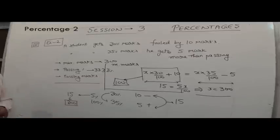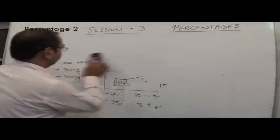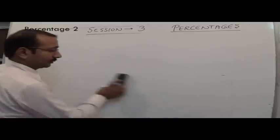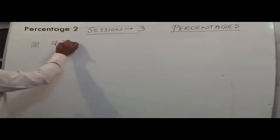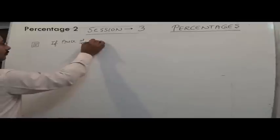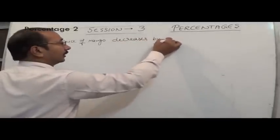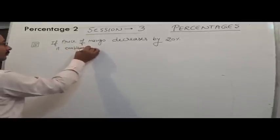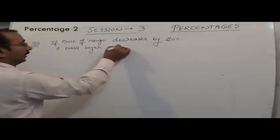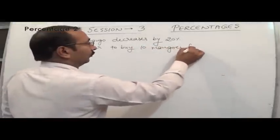I hope the idea is clear. Let us take one more example. If the price of mangoes decreases by 20%, it enables the buyer to buy 10 mangoes more for ₹100.